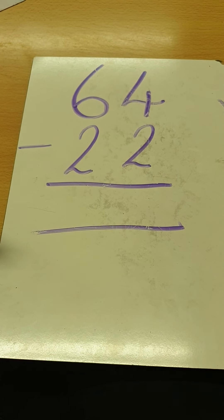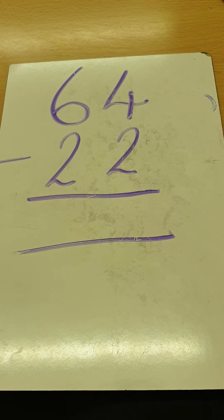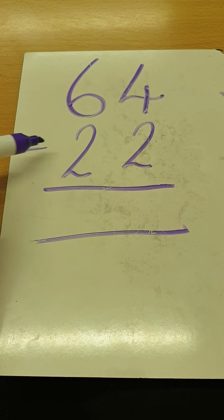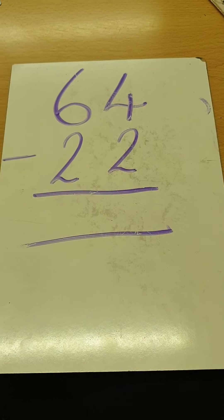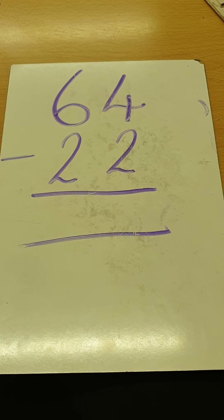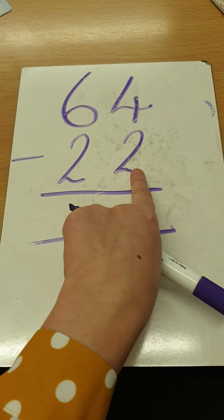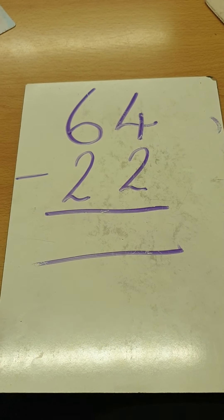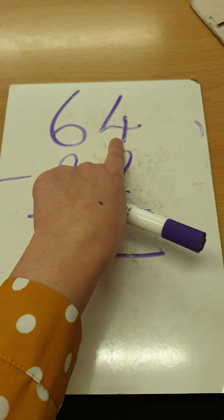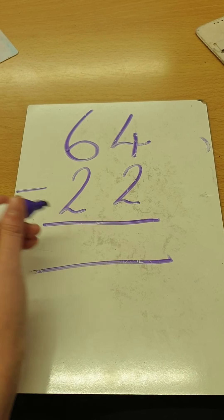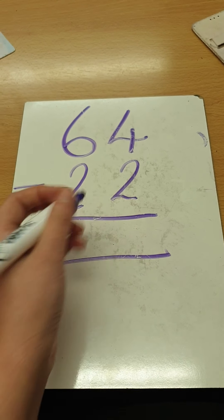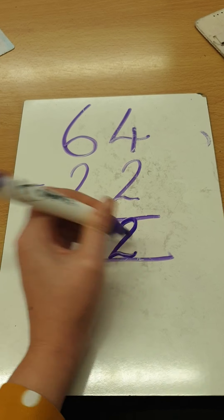Let's have a look at another sum — we're getting a bit trickier now. It says 64 take away 22. What do we take away first — our tens or our ones? We take away our ones first. I've got four ones take away two ones. Can you do that? Brilliant — it's two. So I'm going to make sure that my two ones is underneath the ones in the line.